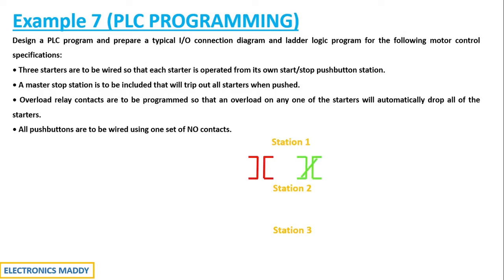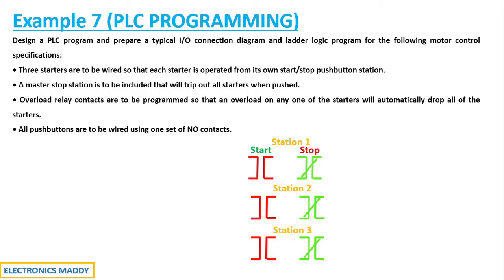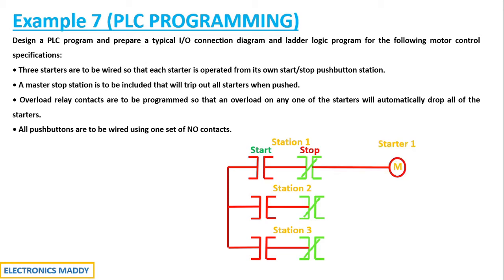There are three stations, each with a start push button and a stop push button. Start push buttons are given by normally open contacts and stop buttons by normally closed contacts, because normally closed contacts are short-circuited when not energized — once energized they act as open circuits, stopping the operation. Station two and station three each have their own start and stop push buttons, and each station has its own starter: starter one, starter two, and starter three, connected to their respective starters in parallel.